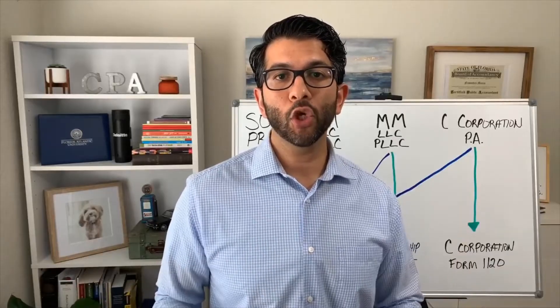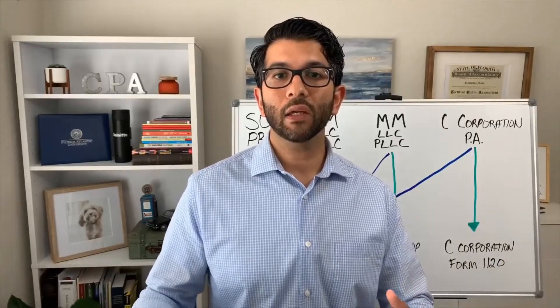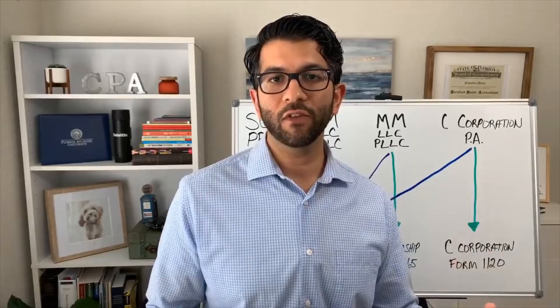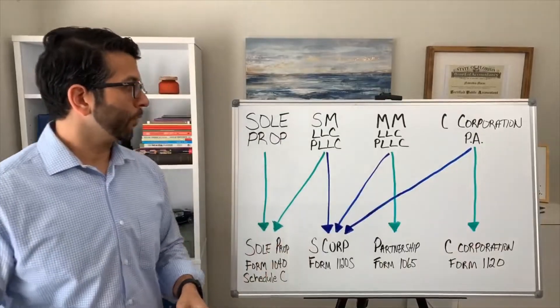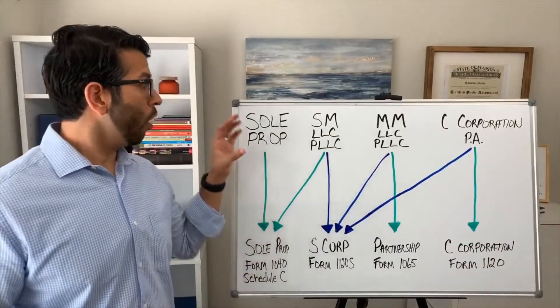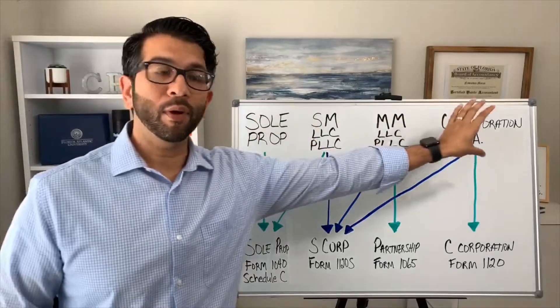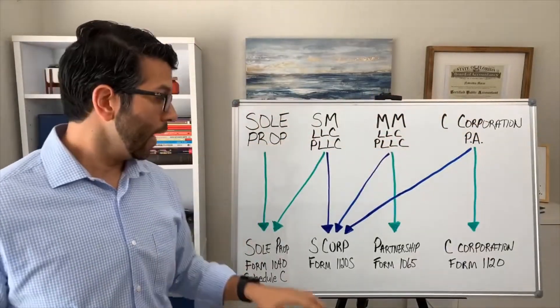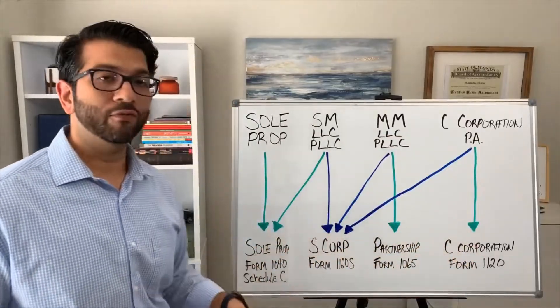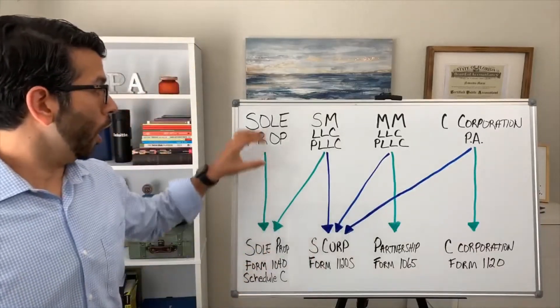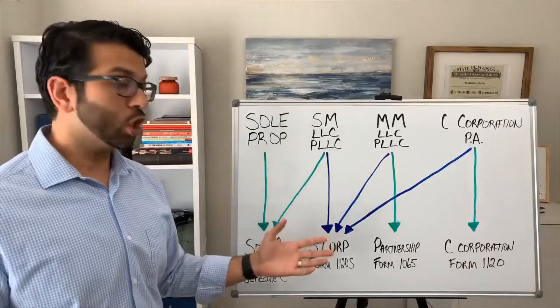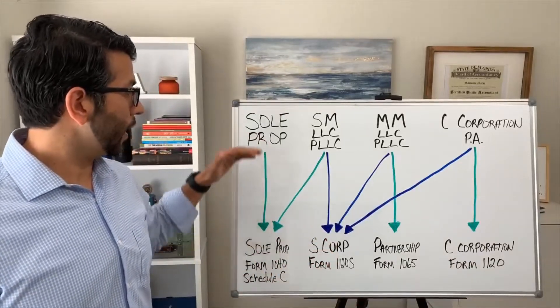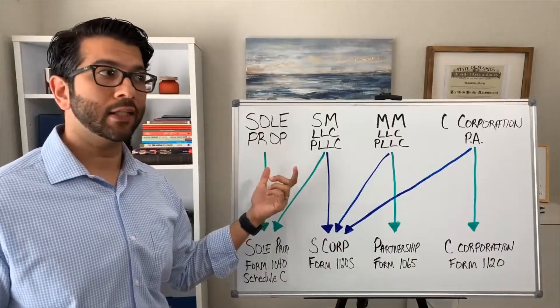When you form a business, you are actually making two decisions: a legal decision and a tax decision. So let me lay the foundation for this video. When you form a business, you are going to be treated in certain ways from a legal perspective, and then there are different ways you could be treated from a tax perspective. The green color indicates how a particular entity is taxed by default.